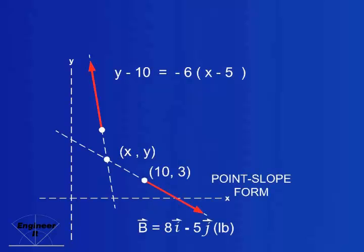Given B in vector notation and a point on its line of action, we can again use point-slope form to create an equation for its line of action.